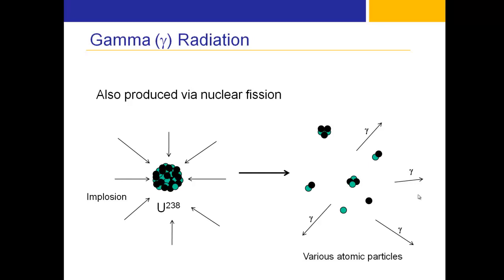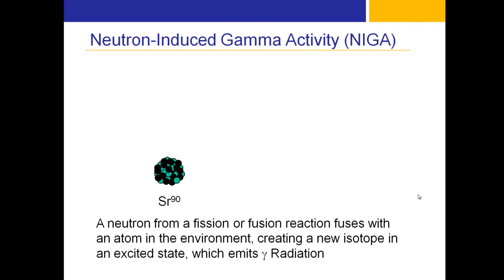In fission, you're literally splitting the nucleus of a very heavy atom like uranium or plutonium. You also have a type of radiation called neutron-induced gamma activity. In the previous example, the fission reaction caused uranium-238 to split into many different particles.